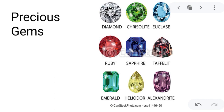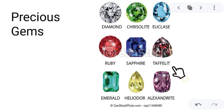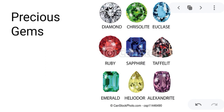Next, let us talk about precious gems — these are rare or hard-to-obtain minerals that can be used as jewelry with specific value. Examples are diamonds, chrysolite, euclase, ruby, sapphire, taaffeite, emerald, heliodor, and alexandrite.